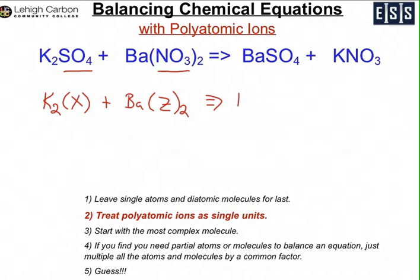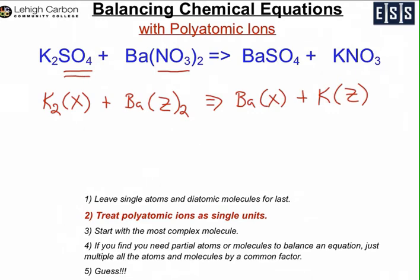Over on the products side, we do similarly: you have barium and one sulfate, which we represent with X, and then potassium and the nitrate is Z, with only one nitrate on this side. By using X and Z, we don't have to break up, in the case of sulfate, the sulfur from the four oxygens, and in the nitrate, you don't have to split nitrogen from the oxygens and try to balance those atoms by themselves.